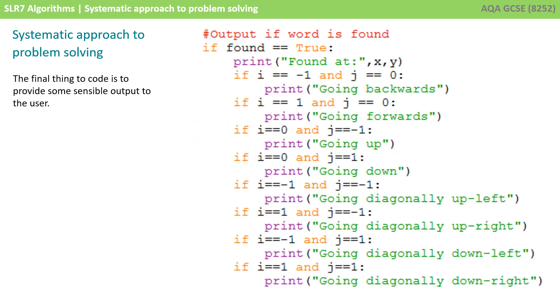The final thing to do is to provide some sensible output. It would be handy if the program told us where it found the first letter of the word, and then which direction to look for the rest of the letters. So, this little part of the program tells you the x and y coordinates where the first letter is found, and then whether you're going backwards, forwards, up, down, or diagonally in order to find the rest of the word.